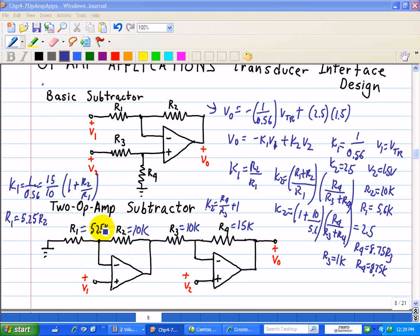So let's say R2 is 10K. Well that implies that R1 is 52.5K. So the overall gain of this is what we want, which is 1 over 0.56. So that concludes the design for the second 2 op amp configuration.